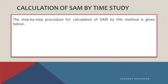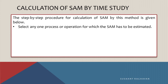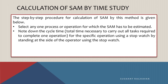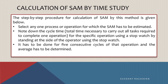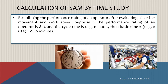Calculation of SAM by time study. The step-by-step procedure for this method is as follows: select any one process or operation for which the SAM has to be estimated. Note the cycle time — total time necessary to carry out all tasks required to complete one operation — for the specific operation using a stopwatch, standing at the side of the operator. This has to be done for five consecutive cycles and the average determined. The basic time equals cycle time multiplied by performance rating. Suppose the performance rating of an operator is 85% and the cycle time is 0.55 minutes; then basic time equals 0.55 × 85% = 0.46 minutes.